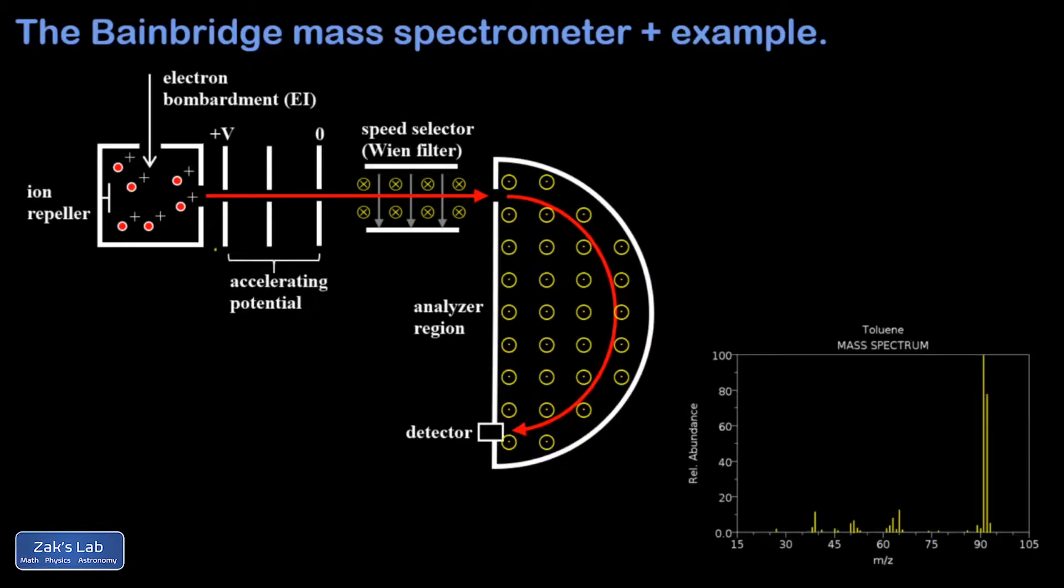A magnetic sector analyzer allows us to find the mass, or at least the mass-to-charge ratio, of ionized atoms and molecules by taking advantage of the fact that the curvature of a charged particle in a magnetic field depends on its mass.